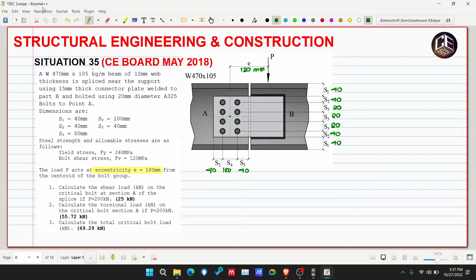Calculate the shear load in kilonewtons on the critical bolt at section A of the splice if P is equivalent to 200 kilonewtons. If you're not aware of what shear load means, we'll have difficulty. When we say shear load, this is the load received by our connection. The question is what force creates shearing in the connection? It's force P.